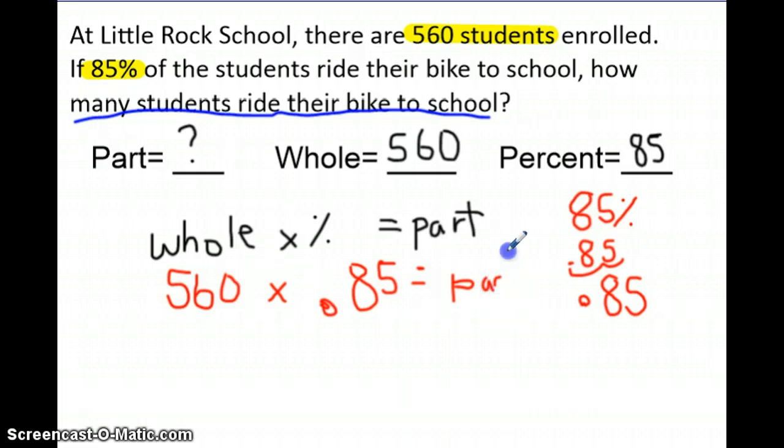I want you to take the time right now and multiply these two together, pause the video, and then you can check to see if your answer is correct. When you multiply 560 times 0.85, you should have got 476 as your part. So that means that 85% of the students that ride their bike, 476 people ride their bike to school out of the whole entire school, which is 560.